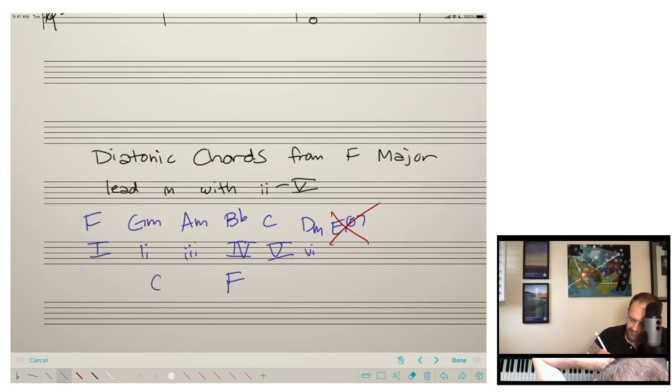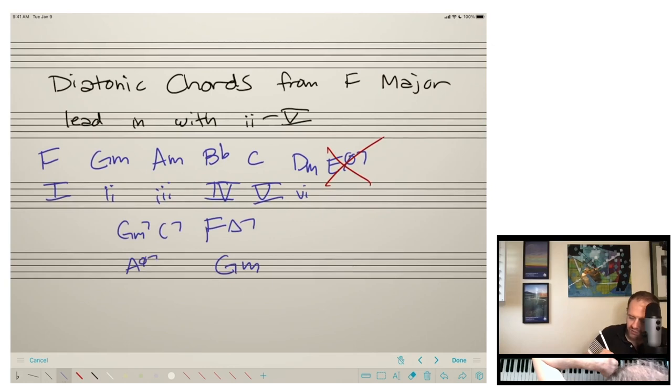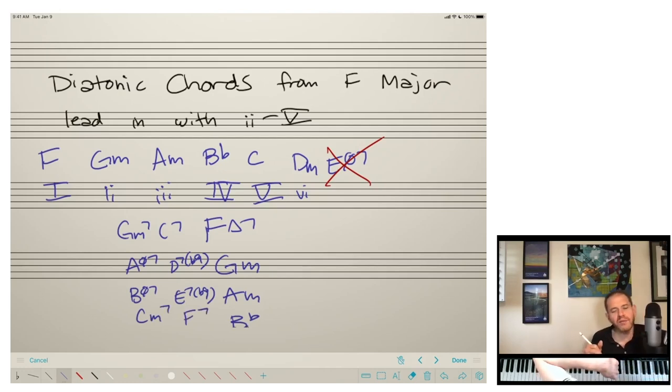So let's just do this in the abstract first. We know a two, five, one to F is going to be G minor seven to C seven to F major. If we're going to G minor, this is a minor key center. So we're going to do a minor two, five, one. We'll do A half diminished to D seven flat nine to G minor. Same thing. If we're going to A minor, we'd do something like B half diminished to E seven flat nine to A minor. If we're going to B-flat, this is a major key, C minor seven to F seven to B-flat. Why am I encouraging you to do this? So these chords make sense in F major and two, five, ones are common in jazz and American songbook style harmony. So by combining these two things, we can make something that makes a lot of sense.